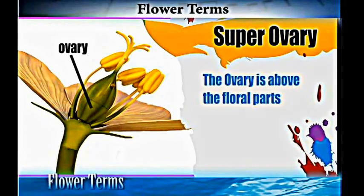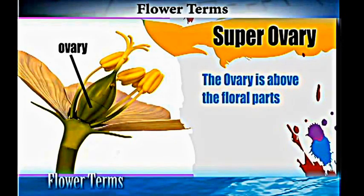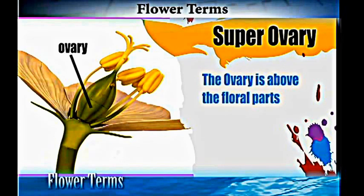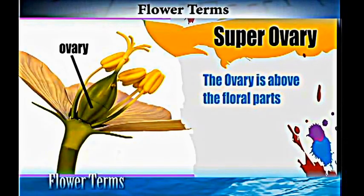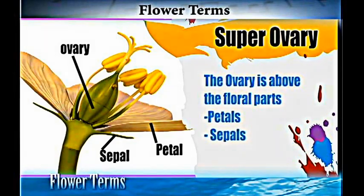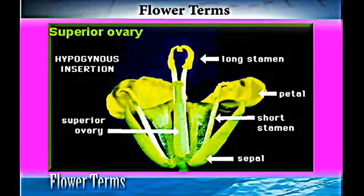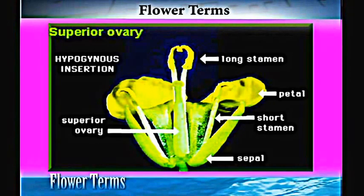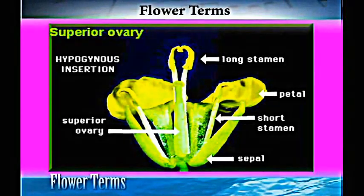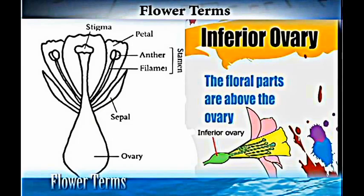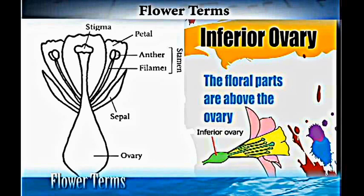Another term is 'superior ovary.' The superior ovary is when the ovary is above the other floral parts — such as the petals, sepals, and epicalyx — on the receptacle. An ovary will be inferior if the other floral parts are above the ovary on the receptacle.